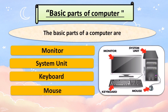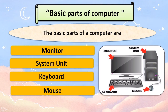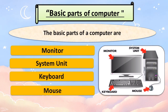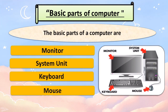All of these are the basic parts of a computer. You can see a picture here showing all of the parts of a computer, with labels: monitor, system unit, keyboard, and mouse. These are all the basic parts of a computer.